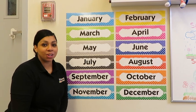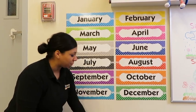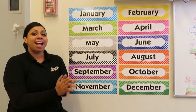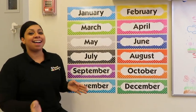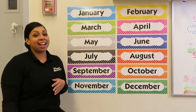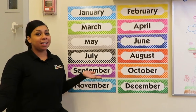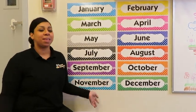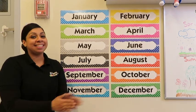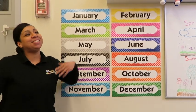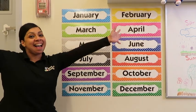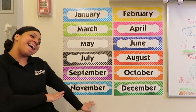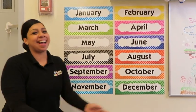Okay, so let's get ready to sing our song. January, February, March, April, May, June, July, August, September, October, November, December. Everybody clap. January, February, March, April, May, June, July, August, September, October, November, December. Yay!